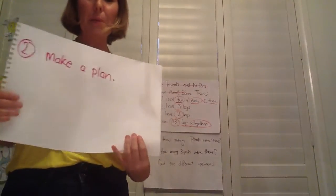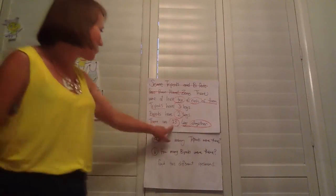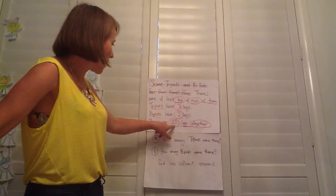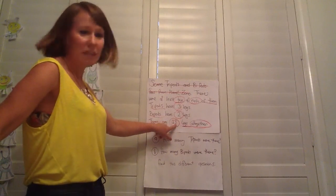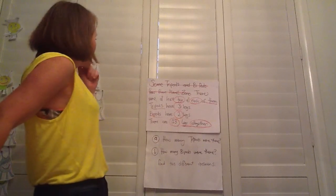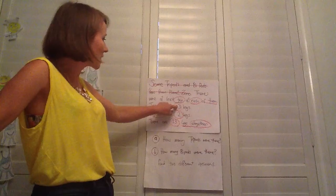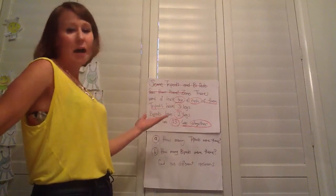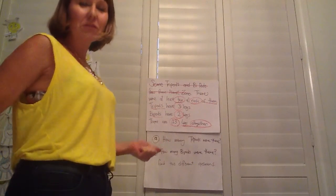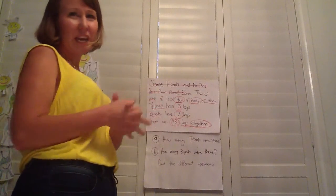Next, we need to make a plan. For this problem, because we've got 23 legs — which is an odd number — we're going to look at odd and even numbers. We're also going to use our two and three times tables because there's two legs and three legs. We'll be multiplying our legs, and also maybe some adding, subtracting, and division.